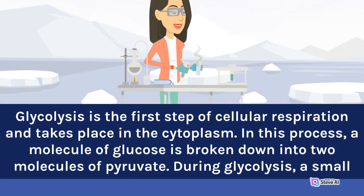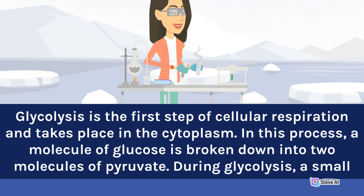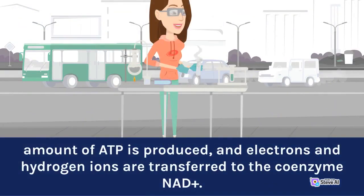Glycolysis is the first step of cellular respiration and takes place in the cytoplasm. In this process, a molecule of glucose is broken down into two molecules of pyruvate. During glycolysis, a small amount of ATP is produced, and electrons and hydrogen ions are transferred to the coenzyme NAD+.